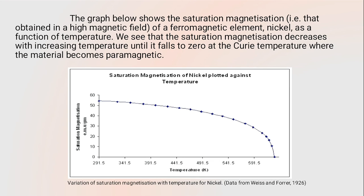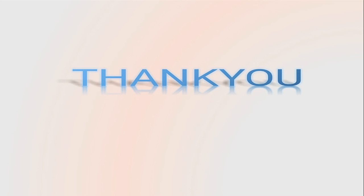This graph of nickel shows magnetic saturation versus temperature. It demonstrates that the magnetizing property changes from ferromagnetic to paramagnetic as temperature increases. Magnetic saturation decreases until it falls to zero at the Curie temperature, where the material becomes paramagnetic. Thank you.